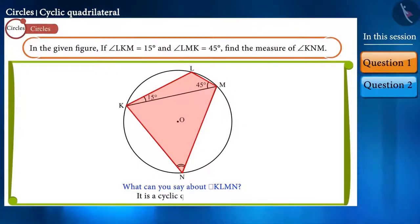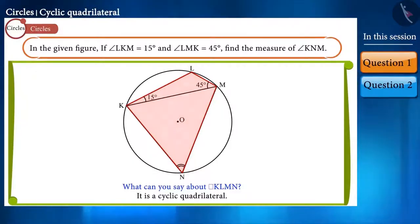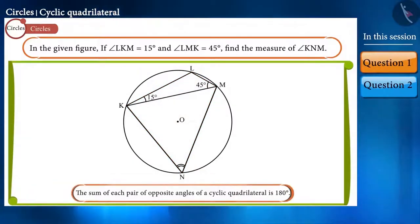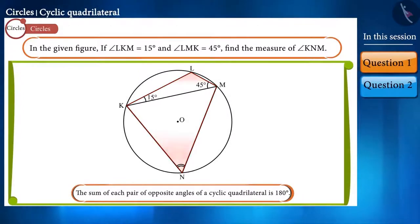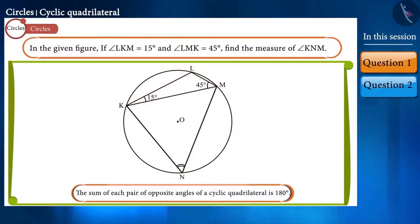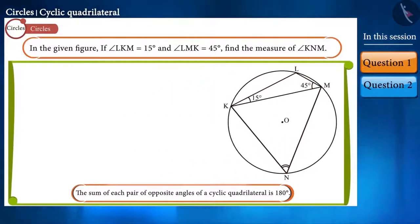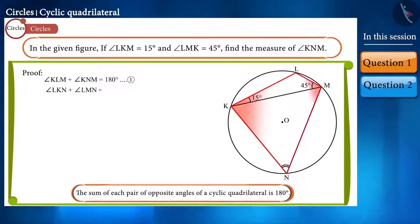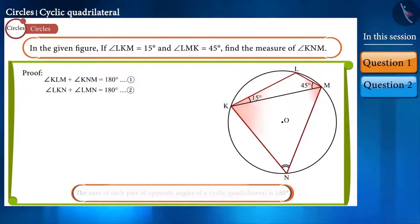It is a cyclic quadrilateral. We know that the sum of each pair of opposite angles in a cyclic quadrilateral is 180 degrees. Using this theorem, we can derive these two equations.